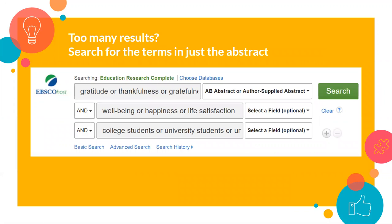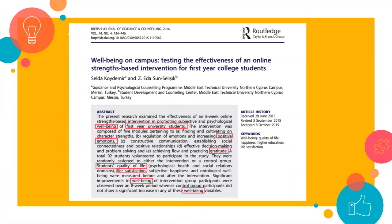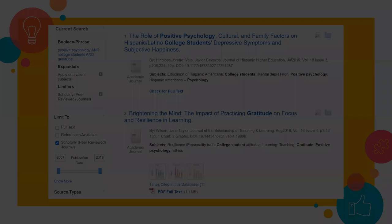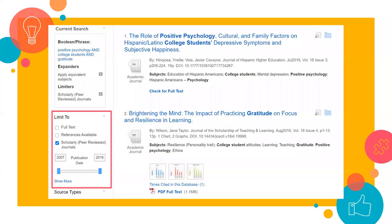If you find that your search pulled way too many results, you can use the select a field drop-down option and limit to abstract. The abstract is a brief summary of the entire article. So searching for your words just in the abstract will usually push your most relevant results to the top of the list. Once you have a good list of results, you can filter and refine even more by limiting to peer-reviewed articles or changing the date to find the most recent articles first.